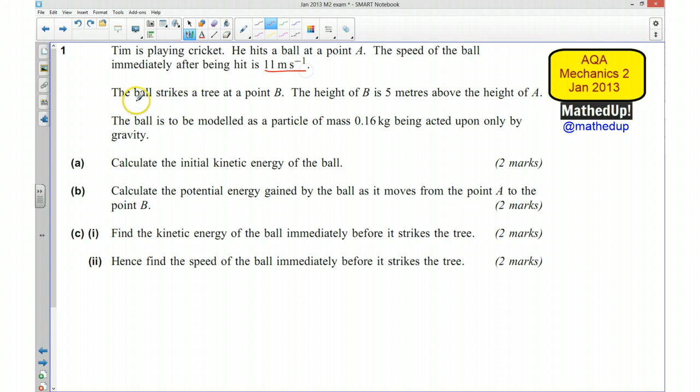The ball strikes a tree at a point B. The height of B is 5 metres above the height of A. The ball is to be modelled as a particle of mass 0.16 kilograms being acted upon only by gravity.